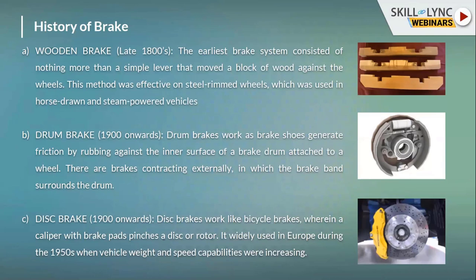The wooden brake is the very earliest brake system used globally. It was used in horse carts and bull cart vehicles. In this brake system, a wooden block is placed near the vehicle wheel's steel rim section. When the brake lever is pulled, the wooden block rubs against the steel rim to slow down the vehicle.